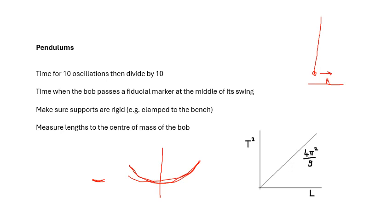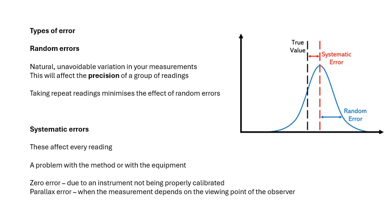Types of error. There are random errors. These are natural, unavoidable variations in your measurements. If you measure the same thing 10 times, you're not going to get exactly the same answer every time. So there is a natural, unavoidable variation. There'll be a normal distribution of readings. They affect the precision of a group of readings. If you're talking about a group of readings, precision is how close together they are. Okay, this is why we take repeat readings. This is why we take several readings - because then we average.